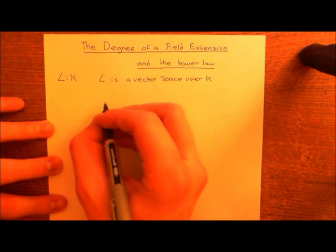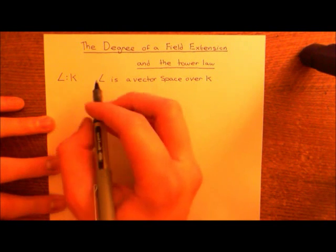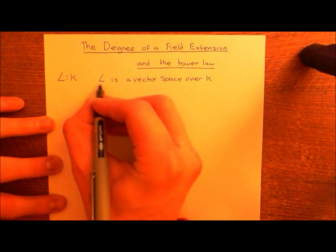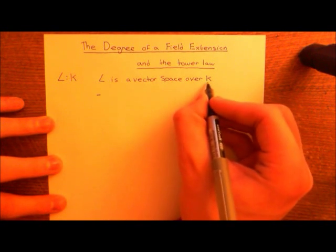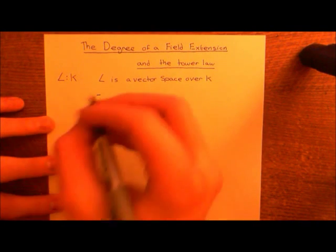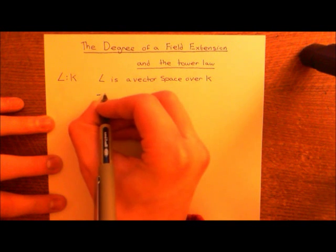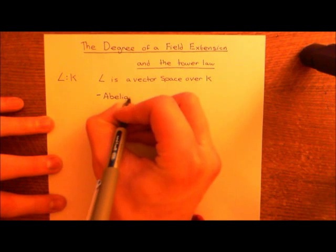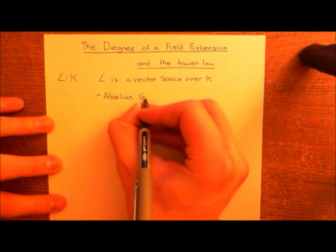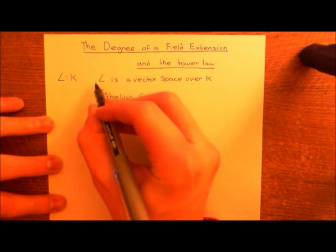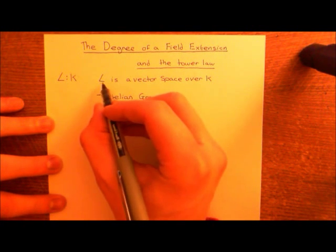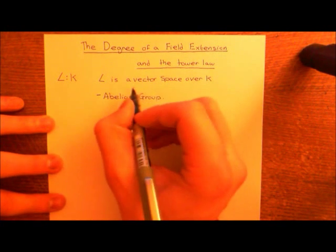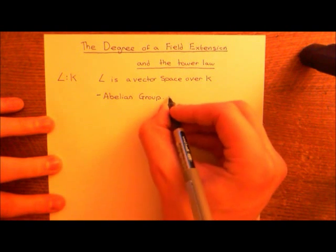Let's understand why this is true. What are the axioms of a vector space? The starting axiom is that the set — in this case L is the vector space and K is the field over which we're talking about this vector space — L needs to be an abelian group under addition. Since L is a field, you can add any two elements in that set together, and this addition does form an abelian group because that's part of the field axioms.